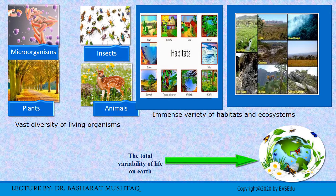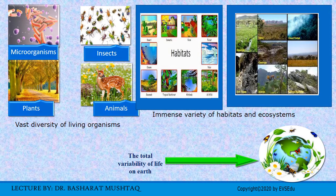Have a look at these pictures. The earth holds a vast diversity of living organisms, which includes different kinds of microorganisms, insects, plants, and animals. The earth also holds an immense variety of habitats and ecosystems. The total diversity and variability of living things and the systems in which they live is the total variability of life on earth.